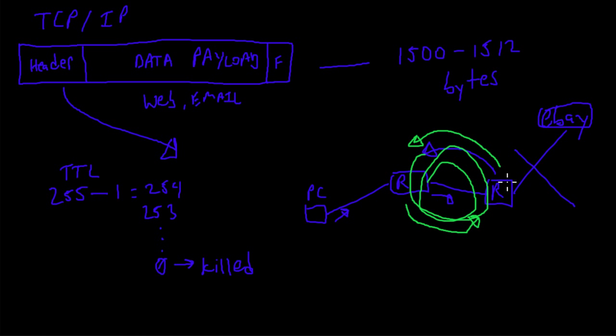That's not a good situation at all. But because of the TTL, every time the packet hits a router it's decremented by one. Eventually it hits zero, a signal is sent back to the PC saying the packet has been killed. That is the reason for the TTL — one of the very important pieces of the TCP/IP header.